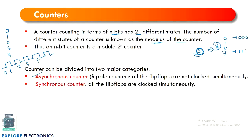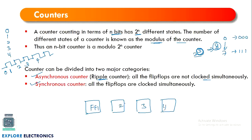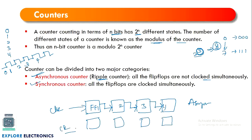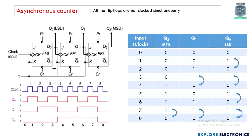There are two types of counters: asynchronous counters (also called ripple counters) and synchronous counters. In an asynchronous counter, all flip-flops are not clocked simultaneously — the clock is given to the first flip-flop, and the output of each flip-flop serves as the clock input to the next. In a synchronous counter, all flip-flops share a single common clock signal.